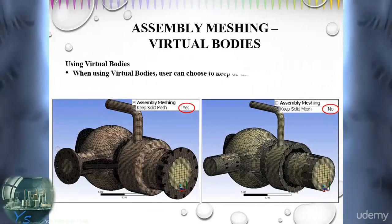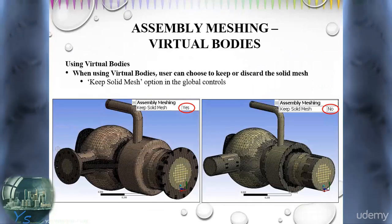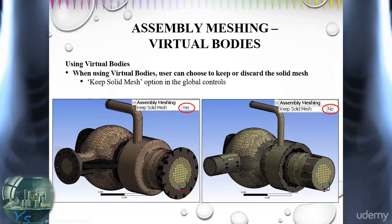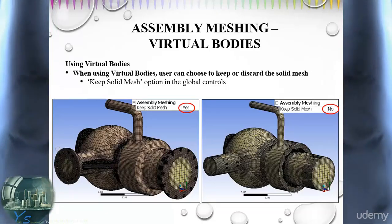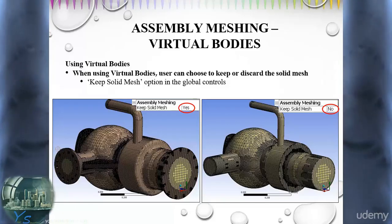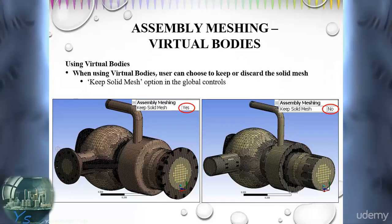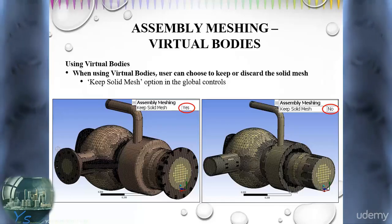When using virtual bodies, the solid has to be meshed too. If we do not need the solid as a cell region in the CFD simulation, we can delete it automatically after the mesh is generated. Of course, we can also choose to disable this solid region only in the solver.